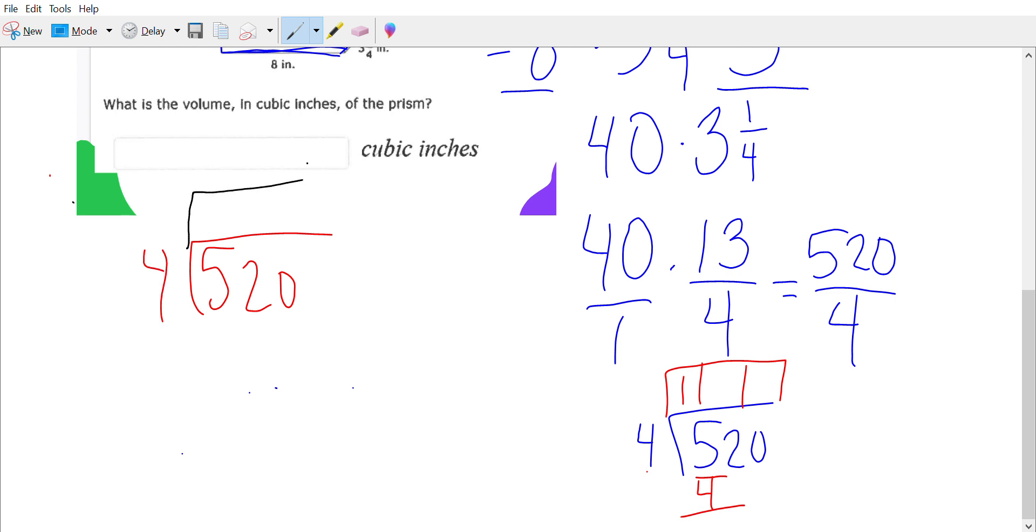All right, draw your boxes. Four goes into five one time. One times four is four, subtract it out, bring down your one. You're gonna then bring down your two. Four goes into twelve three times. Three times four is 12, subtract it out. Bring down your extra zero. Four goes into zero zero times.